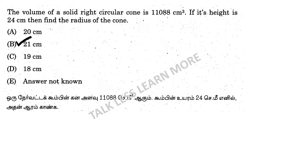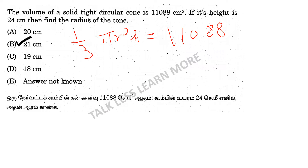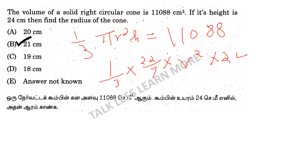The volume of the cone is 1/3 × π × r² × h. Setting this equal to 11,088: 1/3 × (22/7) × r² × 24 = 11,088.